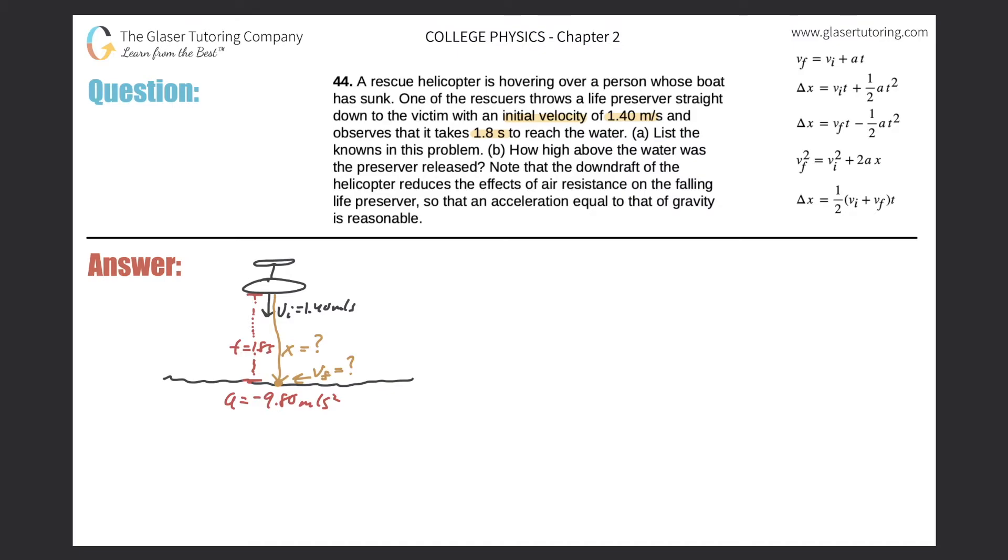Now question B, or part B, is saying how high above the water was the preserver released. So it looks like we're looking for the displacement, or delta x. We know the initial velocity, we know the time, and we know the acceleration. Take a look on the right-hand side - what equation relates those four variables together? Yeah, it would be number two. So let's use equation number two. The displacement is equal to the initial velocity multiplied by time plus one-half acceleration times time squared.